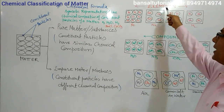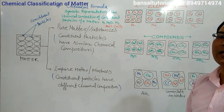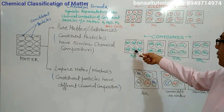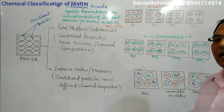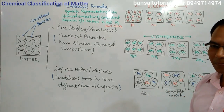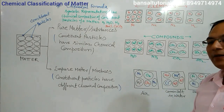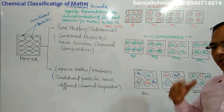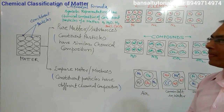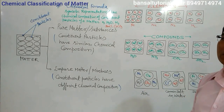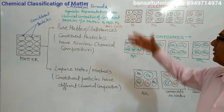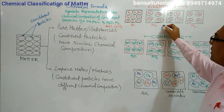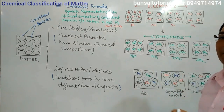These types of pure substances are called elements. Elements are the simplest form of the material. In other cases, the constituent particles have similar composition but are composed of different types of atoms, which are chemically bonded to each other in a fixed ratio. This type of pure substances are called compounds. Compounds are composed of different kinds of atoms, while elements are composed of only one type of atom. When different elements combine chemically together, they form compounds.